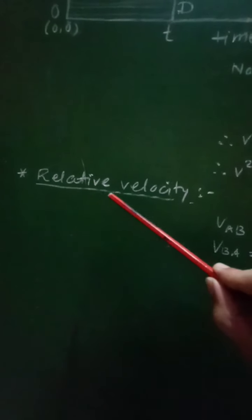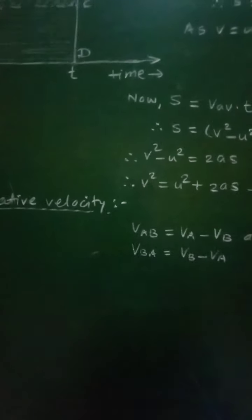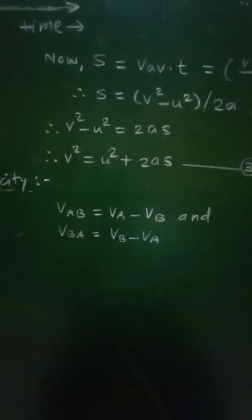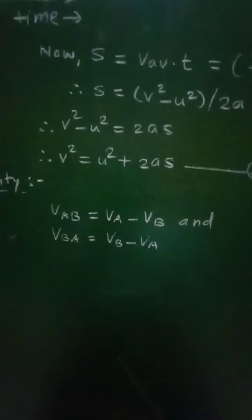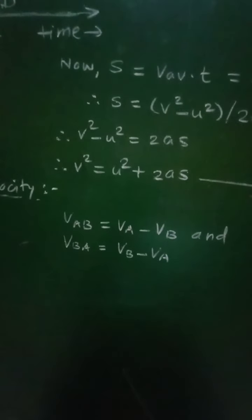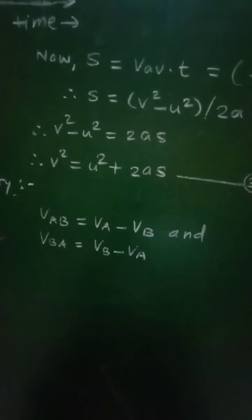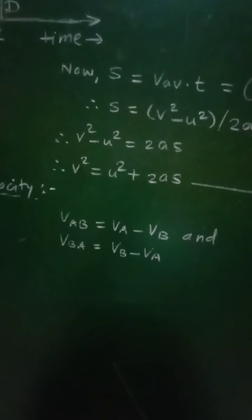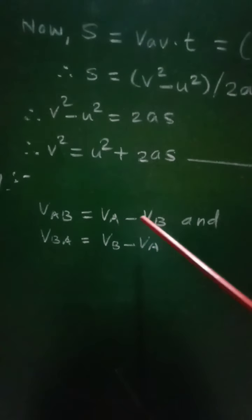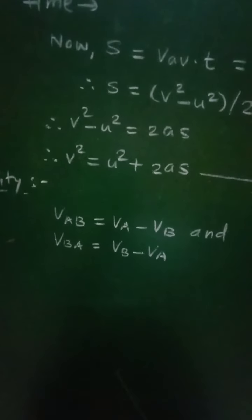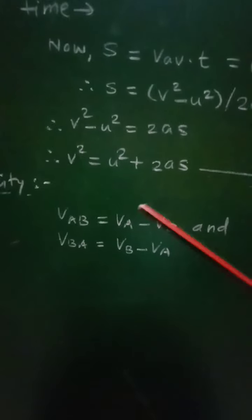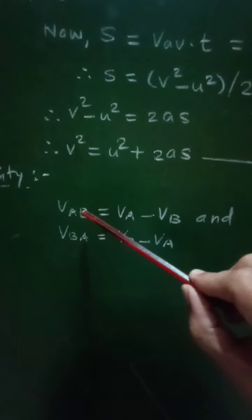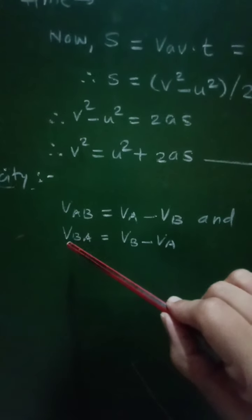Now let us see the next topic, that is relative velocity. What is relative velocity? The relative velocity of one object with respect to another object is the difference between their velocities. For example, the relative velocity of object A with respect to object B is given as v_AB = v_A minus v_B, and the relative velocity of object B with respect to object A is given as v_BA = v_B minus v_A.